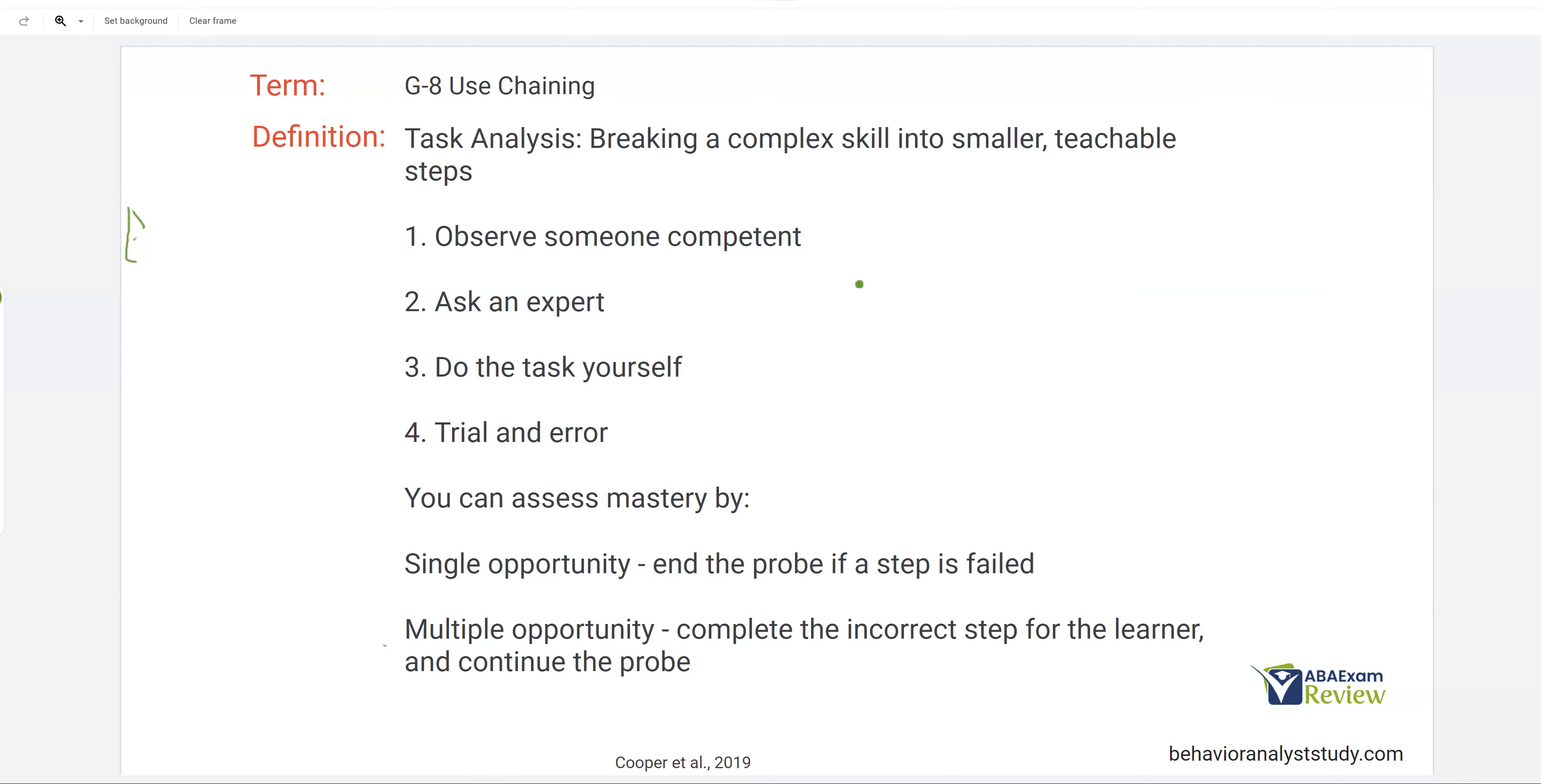At the same time, let's say you are working with an adult who has developmental delays. Well, just because that adult is a certain age doesn't necessarily mean other adults that age are going to be competent or the person we want to watch completing the skill. And so that's important to keep in mind when trying to choose how am I going to analyze the complex skill. So the first way is observe someone competent.